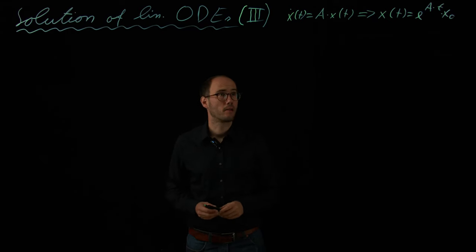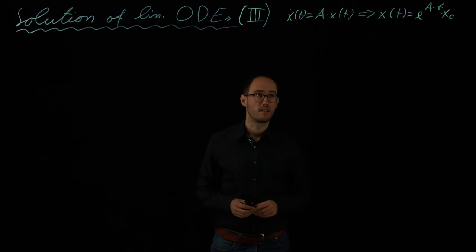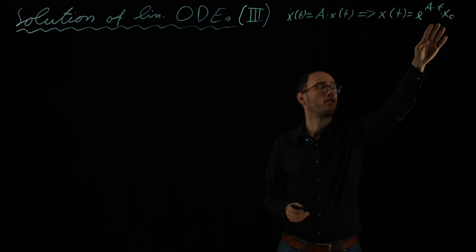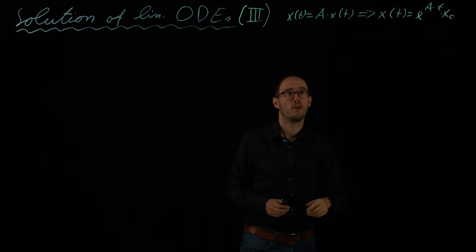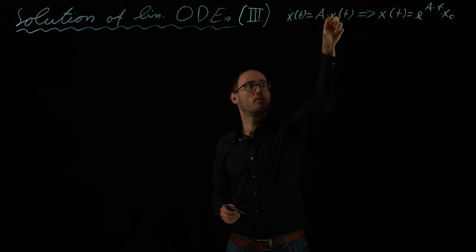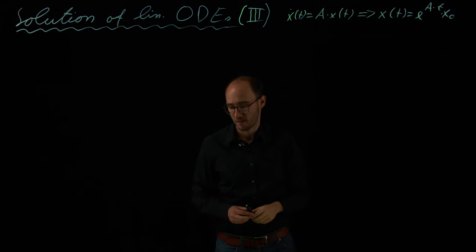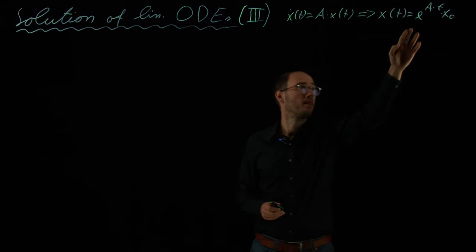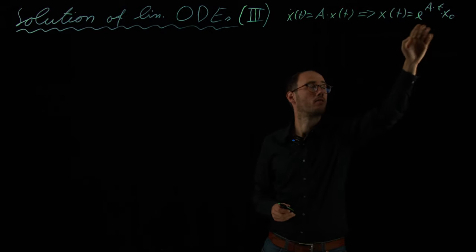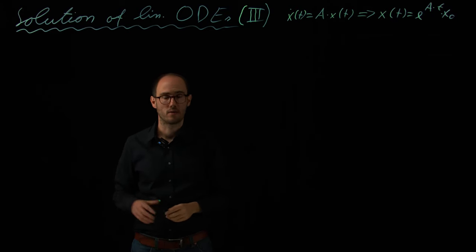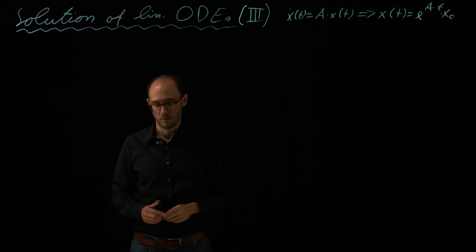Hello everyone, and welcome back to our session on linear ODEs. In the last video, we have seen that the matrix exponential approach basically delivers us the solution to our linear ODE with n states, summarized in a vector x. We have seen that this ended up in an infinite series in order to represent this matrix exponential. Today, I would like to show you, at least for a limited application case, how we can actually solve this in an easier way.